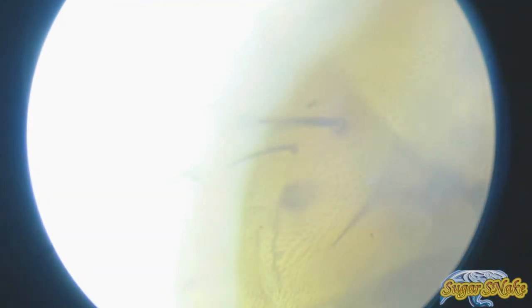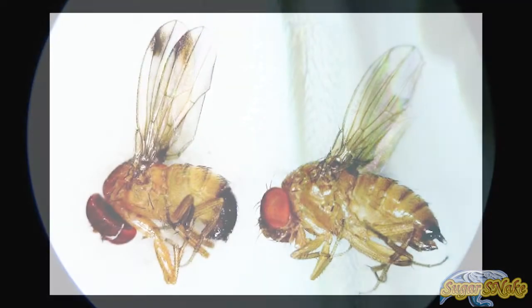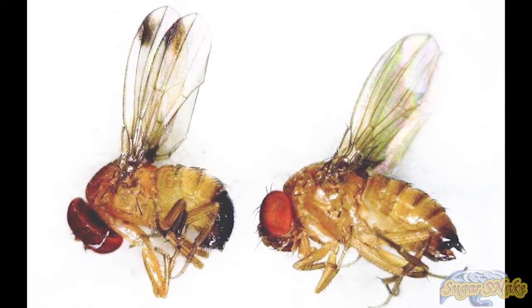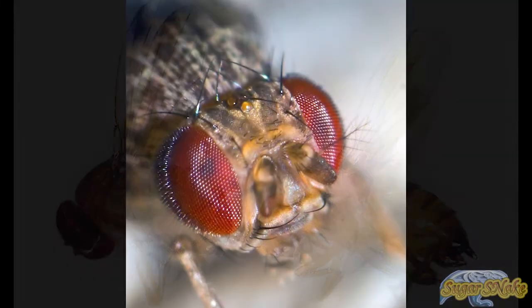Drosophila is sometimes referred to as a pest due to its tendency to live in human settlements where fermenting fruit is found. Flies may collect in homes, restaurants, stores, and other locations. However, because Drosophila do not transmit human disease and are essentially harmless, they do not fulfill the criteria to classify it as a pest.